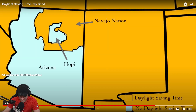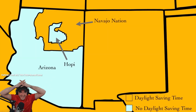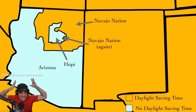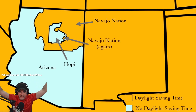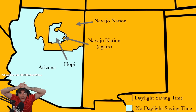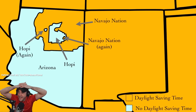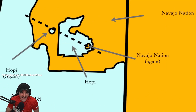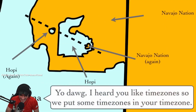We're going four levels deep here! Inside the Hopi Reservation is the Navajo Nation again, and there's also another part of the Hopi Reservation elsewhere in the Navajo Nation. So driving across this hundred-mile stretch would technically necessitate seven clock changes - which is insane.